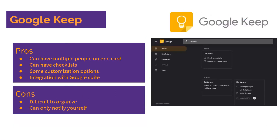Next is Google Keep. Like Trello, you can have multiple people assigned to one card and add checklists to track progress. There are some customization options, though fewer than Trello. It works really well with Google Suite since it's part of it. Downsides are that it can be difficult to organize — the main organization method is pinning tasks, with no boards like Trello. You can also only notify yourself, not others, about due dates.